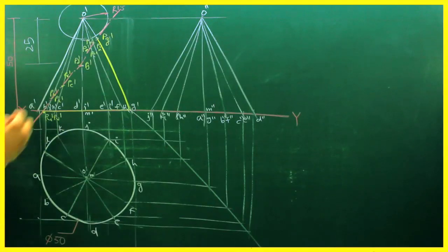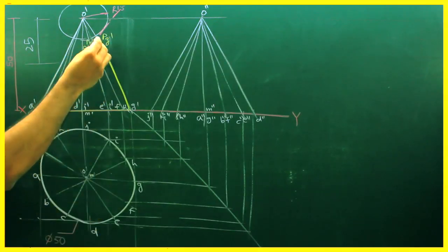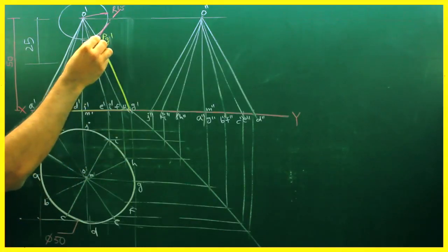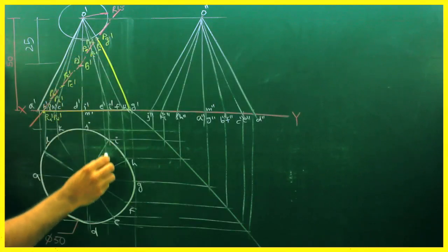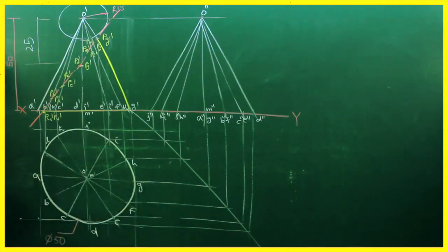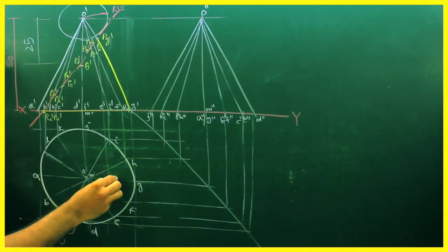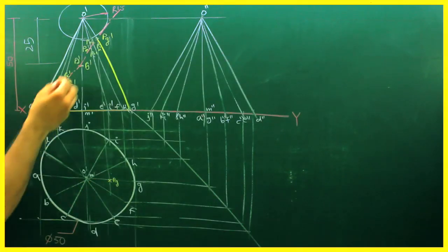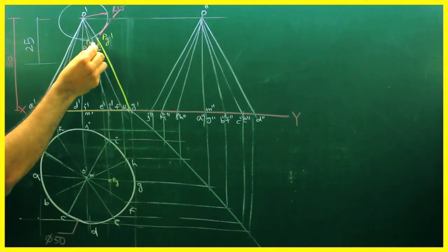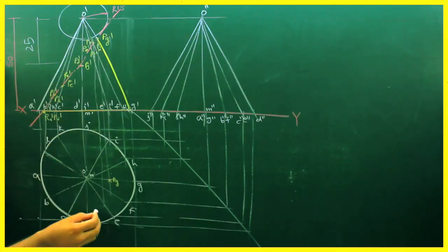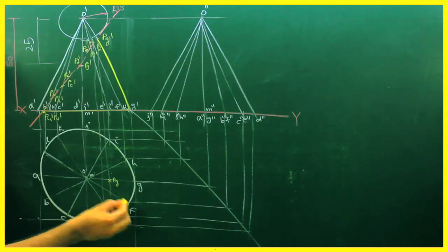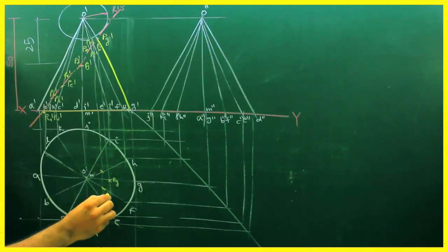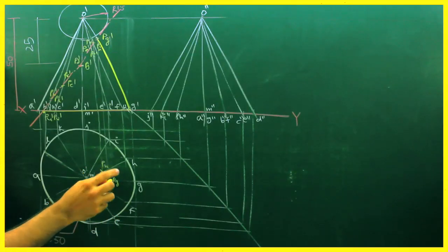Now we will project all these points down. Project one by one: O', G' — you project point PG' down; wherever it meets OG that will be point PG'. After that, project PF' and PH'; wherever they cut O'F' and O'H', those will be points PF' and PH'.